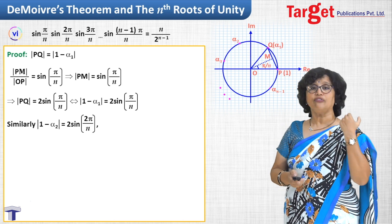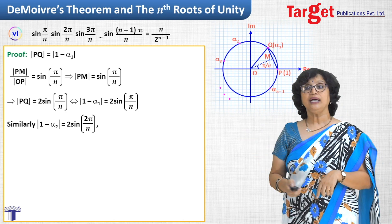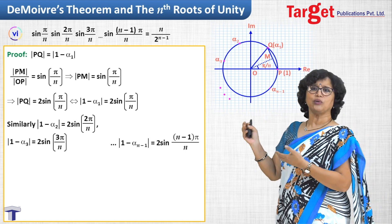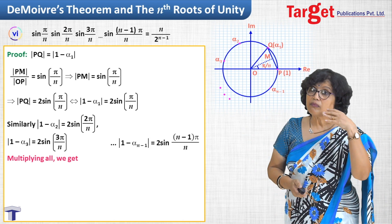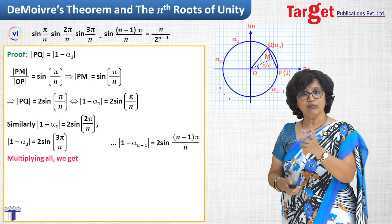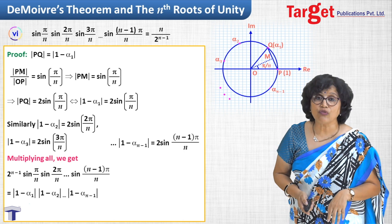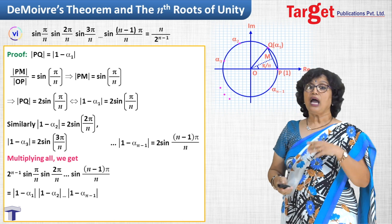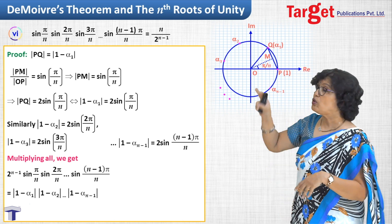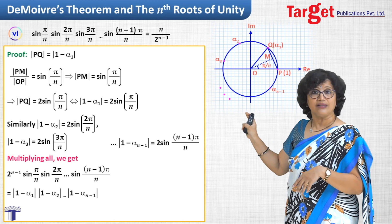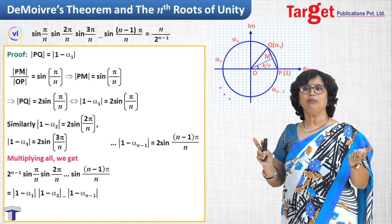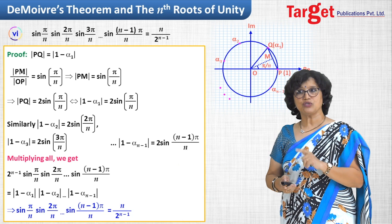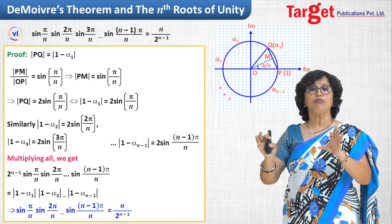Similarly |1 - alpha_2| = 2*sin(2*pi/n), |1 - alpha_3| = 2*sin(3*pi/n), and so on. Taking the product of all moduli |(1-alpha_1)(1-alpha_2)...| gives 2^(n-1) * sin(pi/n) * sin(2*pi/n) * sin(3*pi/n) * ... But we already know this product equals n. Dividing both sides by 2^(n-1), sin(pi/n) * sin(2*pi/n) * sin(3*pi/n) * ... = n / 2^(n-1), which is what appears on the right-hand side. That is how we prove this property.